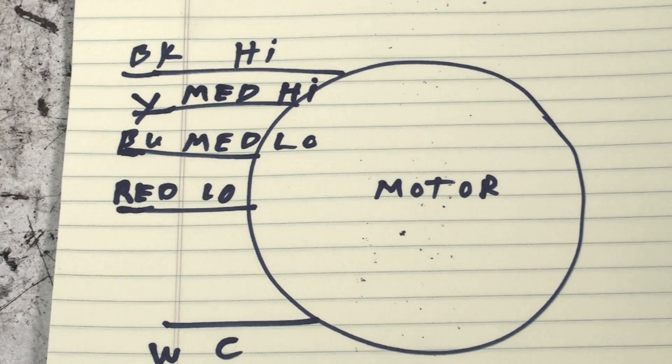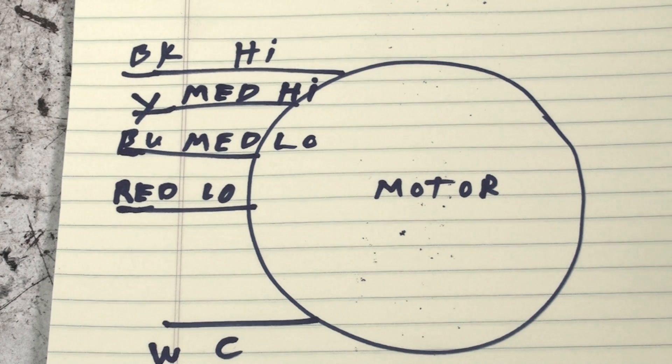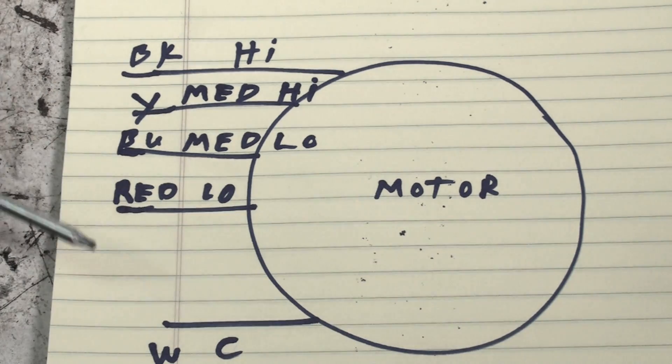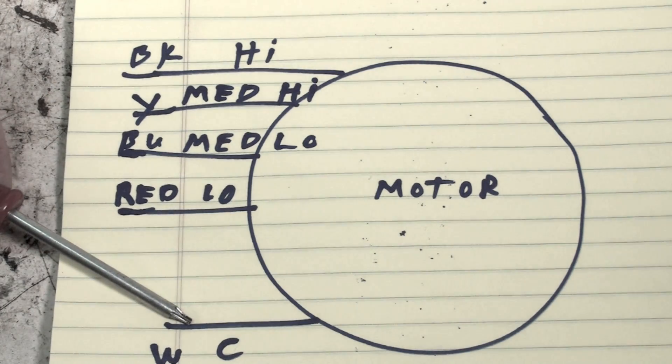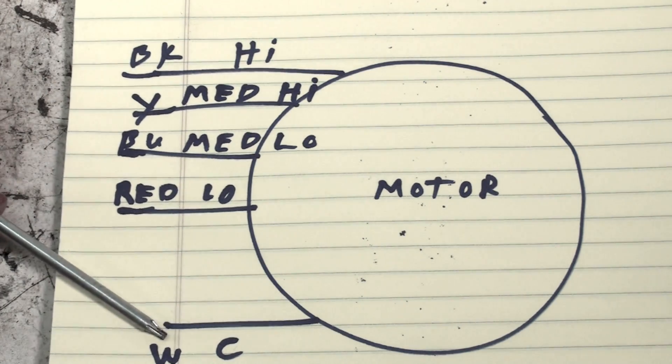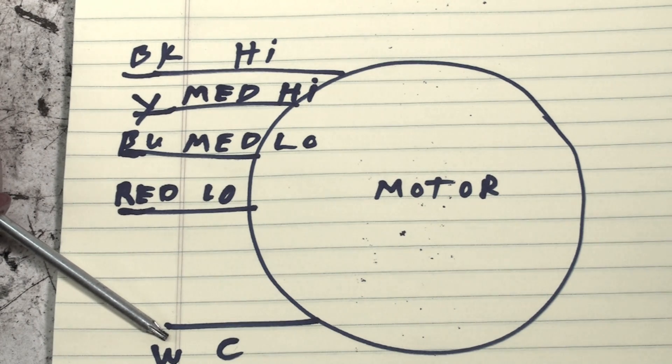I had a question about changing speeds on a gas furnace blower. I wanted to start out by explaining that a multi-speed blower is going to have a common wire. Most of the time the common is white.